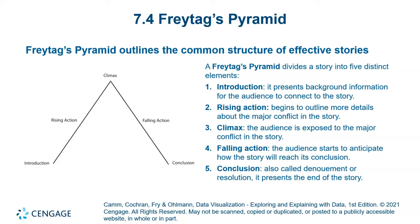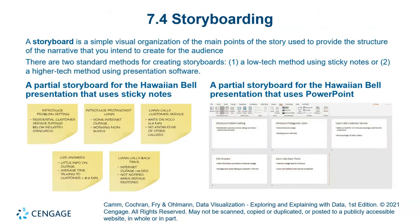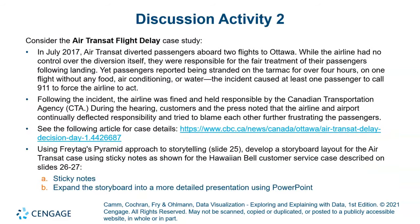The second important framework is the Freytag pyramid. Every story has an introduction, rising action, climax, falling action, and conclusion, and we need to apply this structure to our charts as well. Additionally, storyboarding uses two methods: the low-tech method uses sticky notes placed on boards practically, while the high-tech method uses presentation software such as PowerPoint.